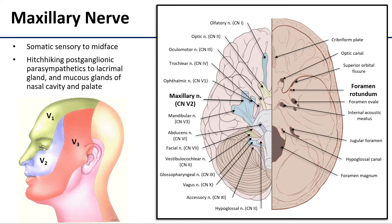Just like we've seen with other divisions of the trigeminal, the maxillary nerve is going to have some parasympathetic hitchhikers. These parasympathetic pathways are going to originate with the facial nerve, but their postganglionic neurons will travel alongside maxillary branches to supply parasympathetic motor to the lacrimal gland and the mucus glands of the nasal cavity and palate.